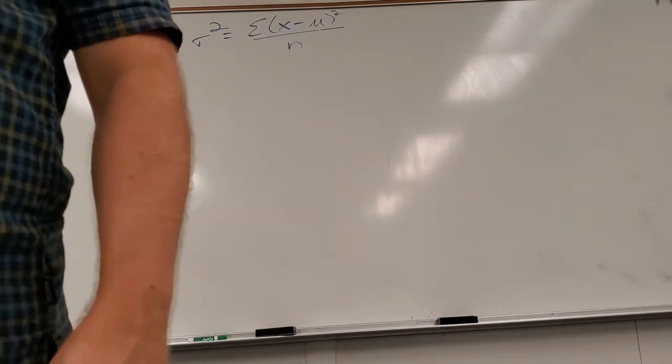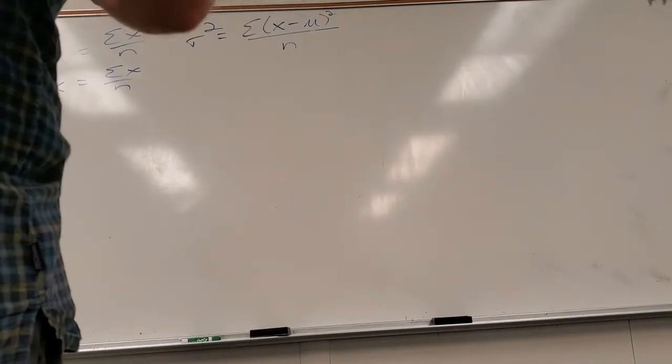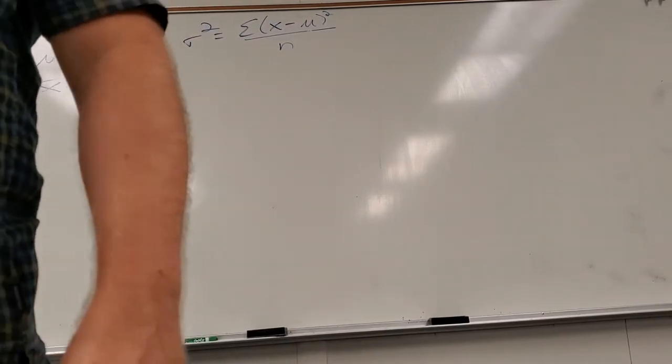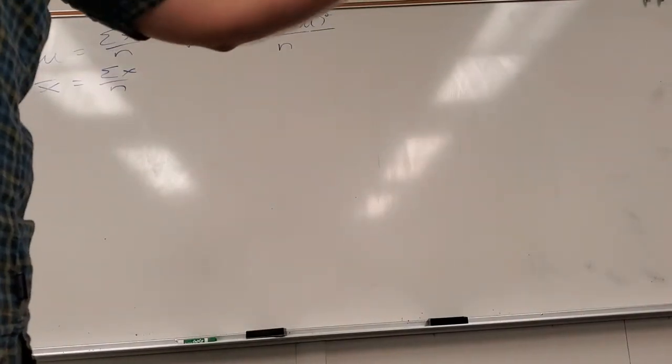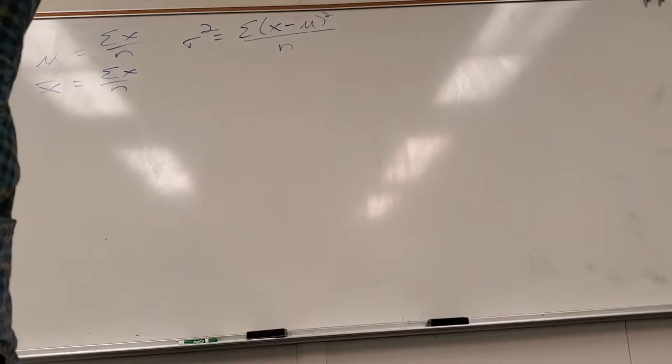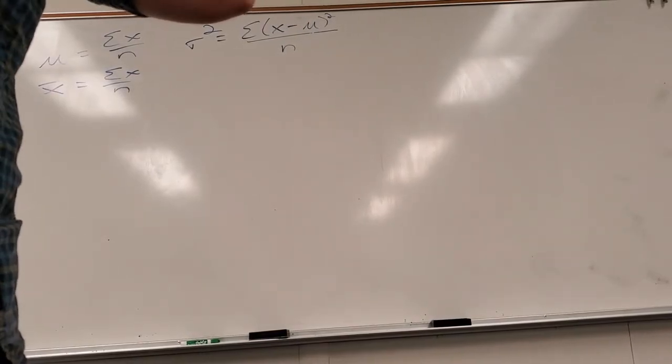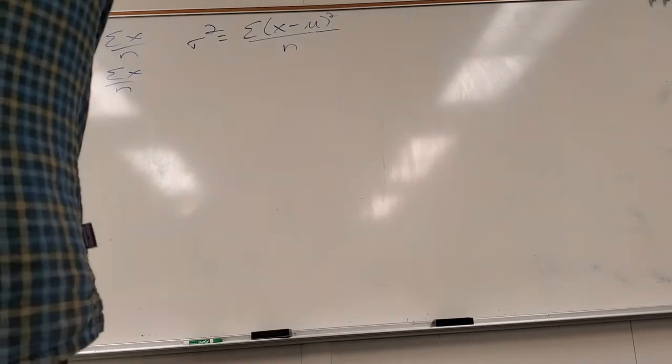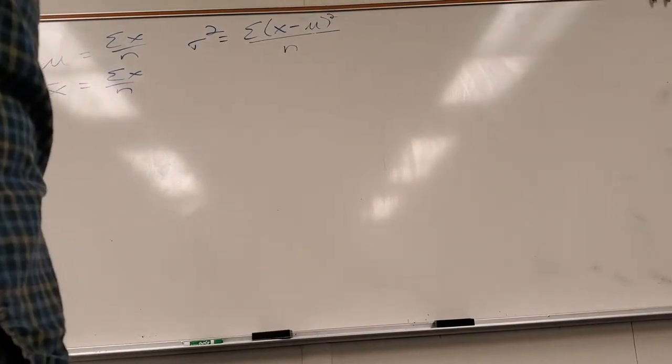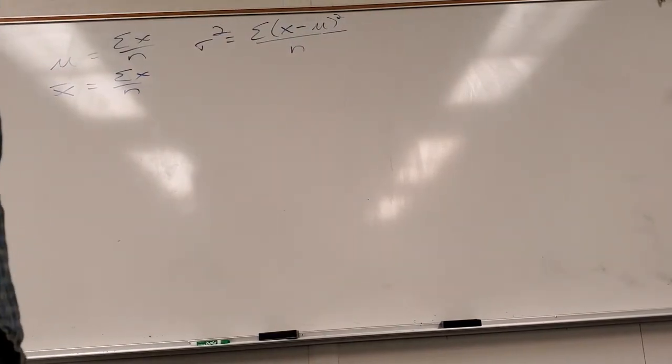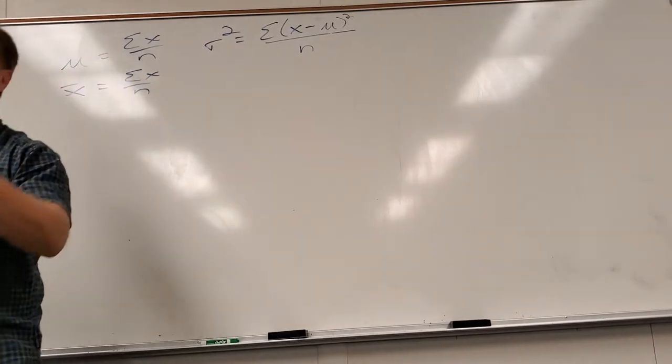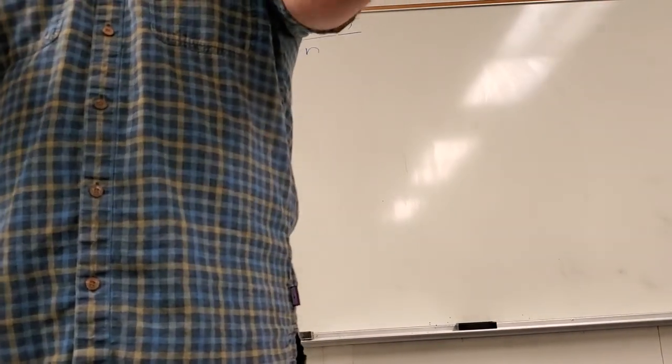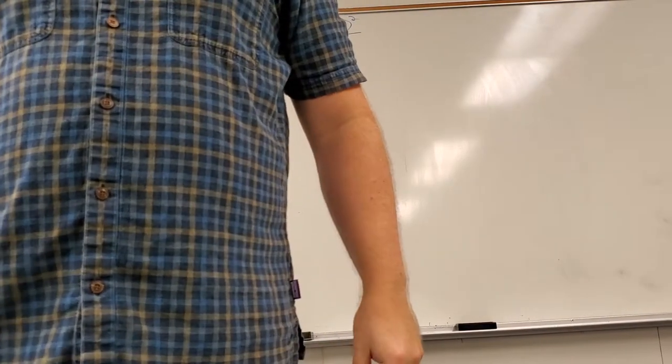And that goes along with the idea that a parameter and a statistic sound exactly the same, except the parameter will reference the whole population. The statistic will reference just the sample. So if I said 87% liked peas, you can't tell. You can't tell if that's a parameter or a statistic. Because what didn't I tell you? 87% liked peas. What's missing? 87% of who? Right? Of what group? 87% of everybody likes peas would be a parameter. 87% of the 30 people I talked to would represent a sample. It talks about samples, so it is a statistic. I love you guys.